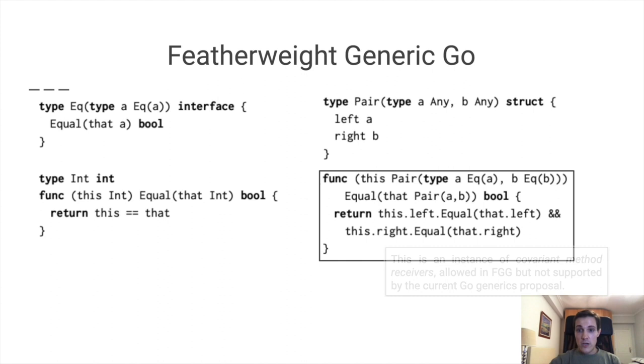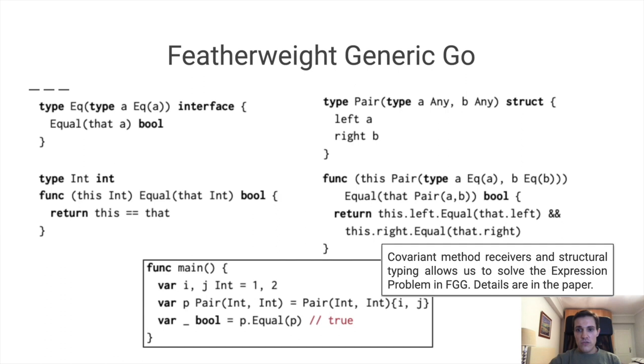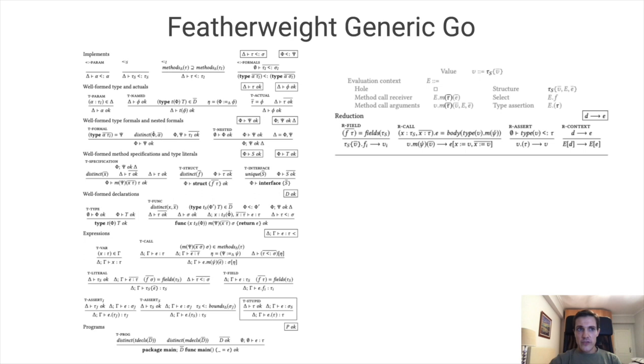To then use generics, we now require explicit type annotations, but in actual generic Go, these will be inferred. As you can see from the complete set of rules for FGG, it is slightly more complex than FG, but still quite minimal. It still fits in one slide with fairly readable font, and it's still a semantically reasonable language.